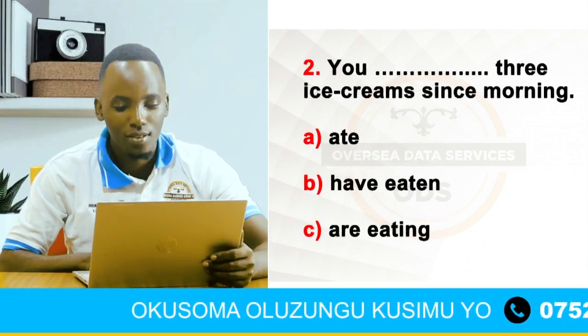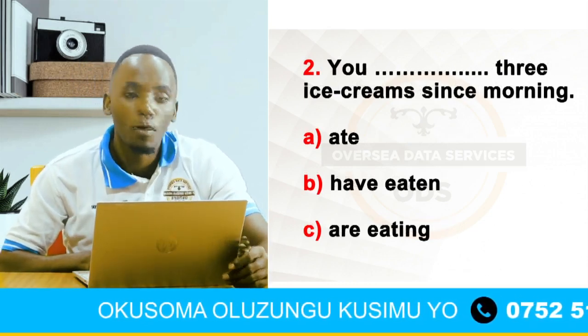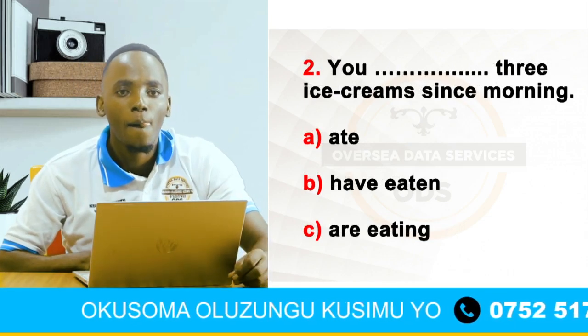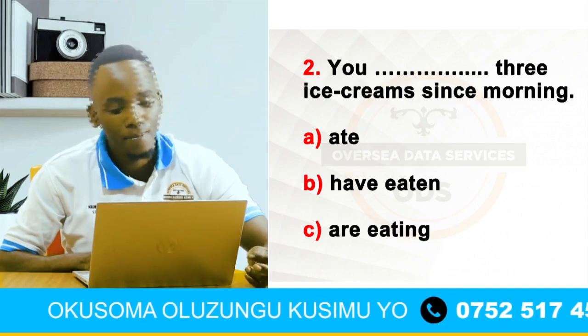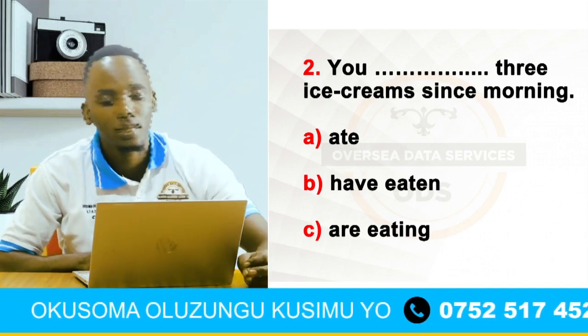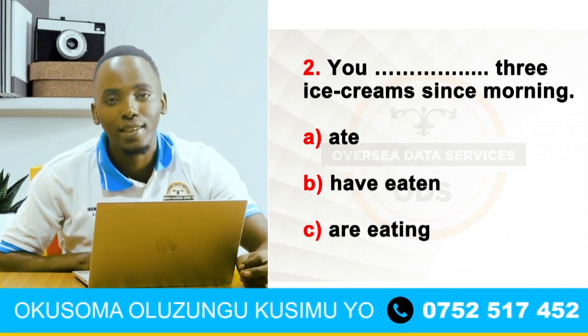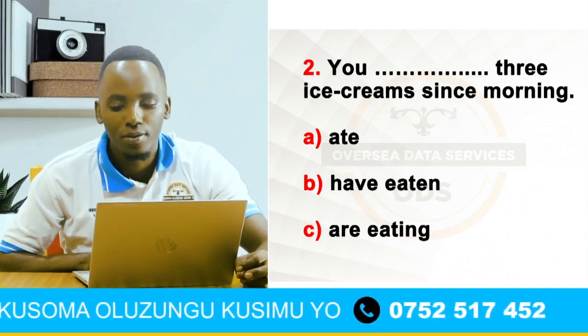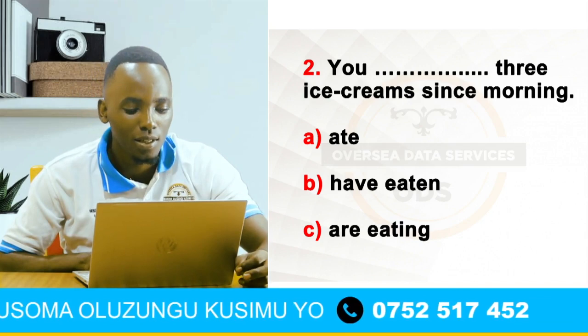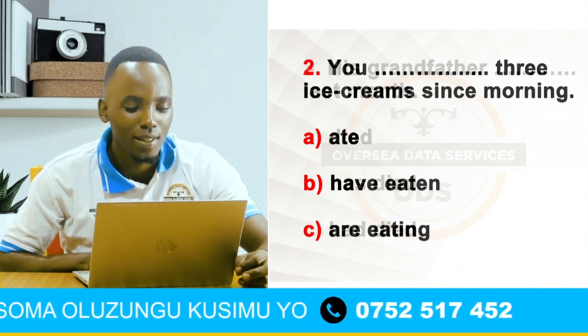Two: you dash three ice creams since morning. Alternatives have: have ate, have eaten, and then are eating. You pick from those three and then get the correct one.